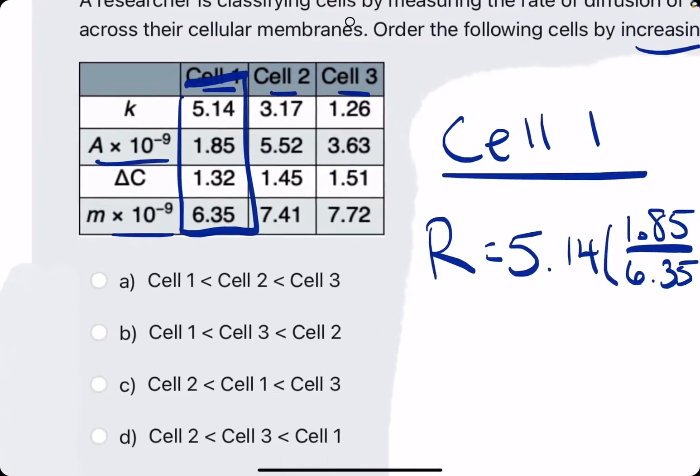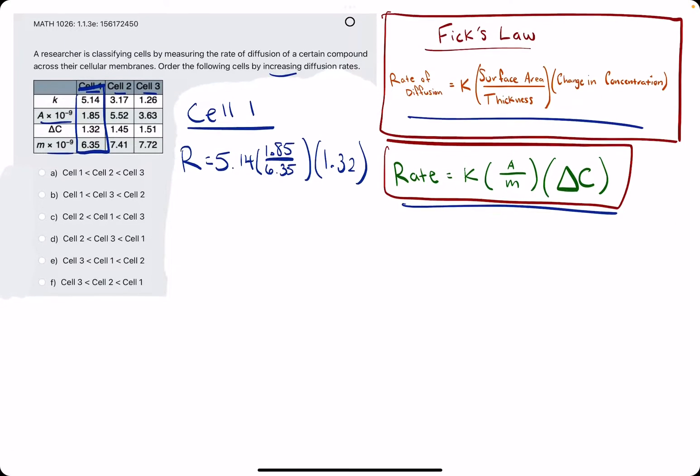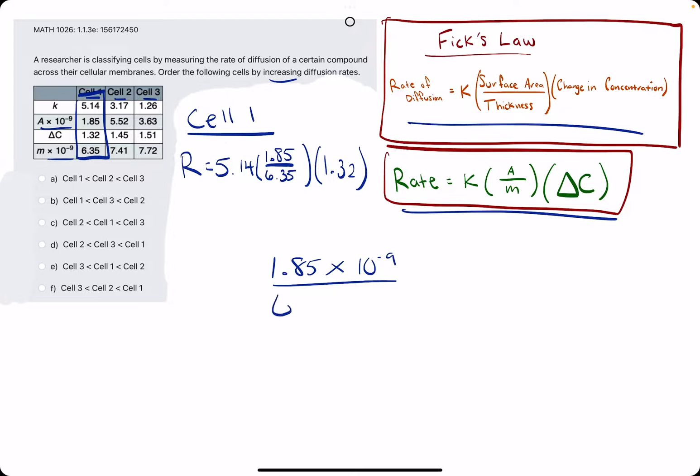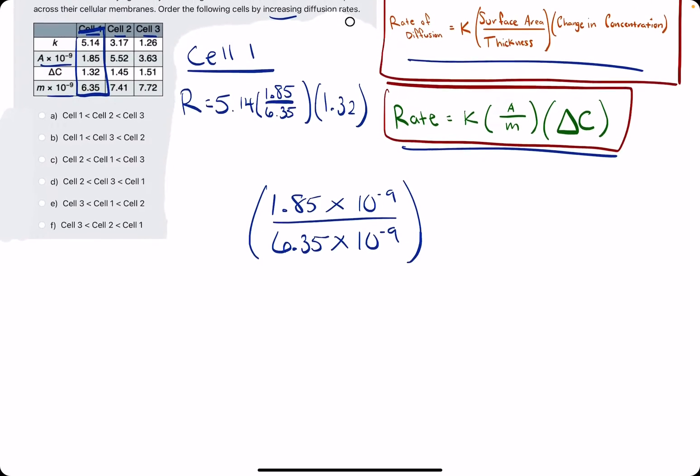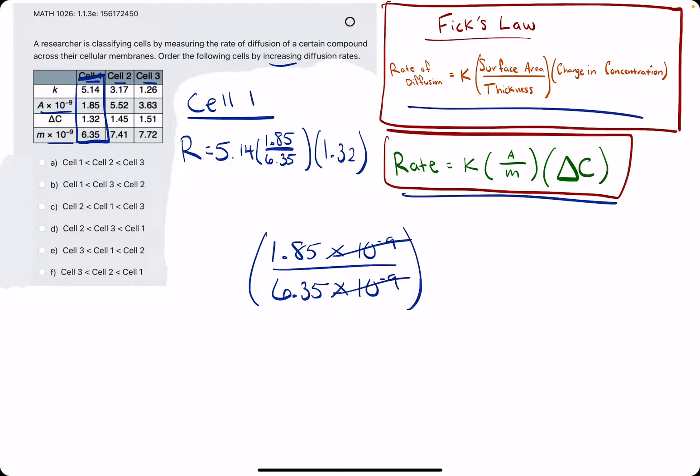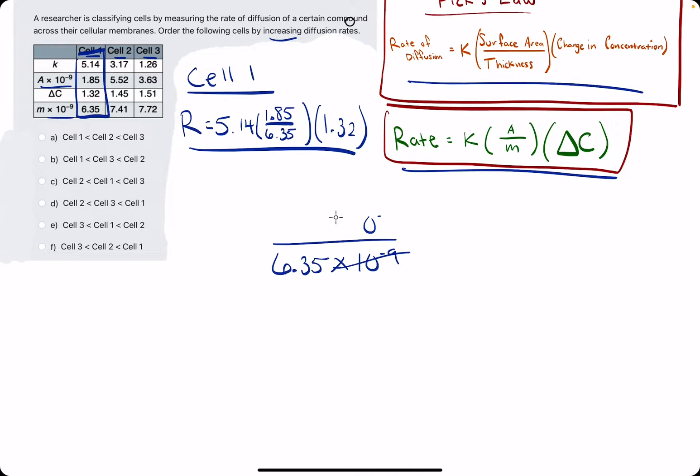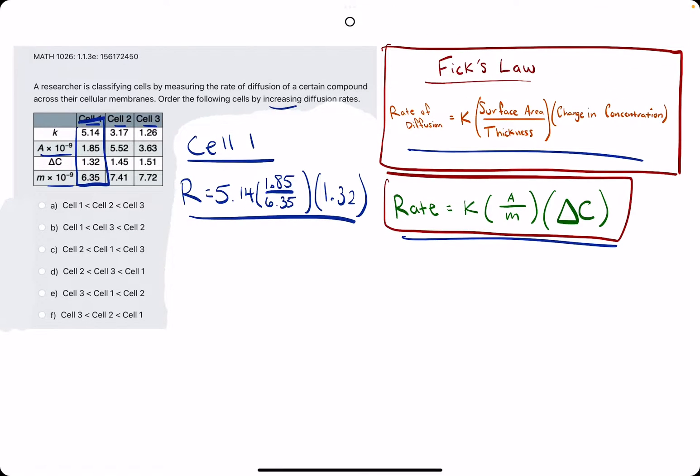You may be asking yourself, what is this times 10 to the negative 9 on both A and m? Well, the convenient part is that because it's on both A and m, technically we should be plugging in 1.85 times 10 to the negative 9 for the area and 6.35 times 10 to the negative 9 for the thickness, but because they're both 10 to the negative 9, those just cancel out. So that's why I've just written it as 1.85 over 6.35. You can basically ignore the times 10 to the negative whatever.